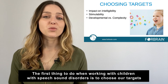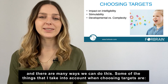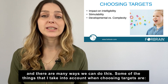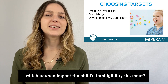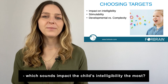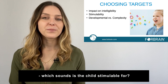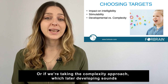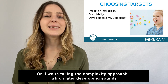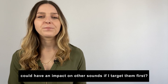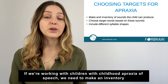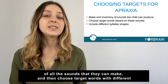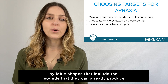The first thing to do when working with children with speech sound disorders is to choose our targets, and there are many different ways that we can do this. Some of the things that I take into account are: which sounds impact the child's intelligibility the most, which sounds is the child stimulable for, which sounds are developmentally appropriate for the child right now, or if we're taking the complexity approach, which later-developing sounds could have an impact on other sounds if targeted first. If we're working with children with childhood apraxia of speech, we need to make an inventory of all the sounds they can make and then choose target words with different syllable shapes that include the sounds they can already produce.